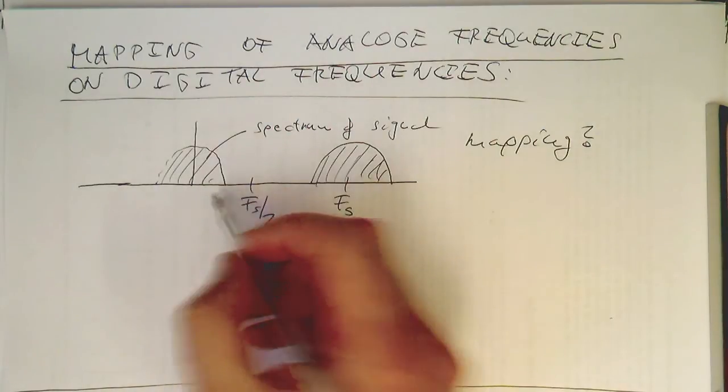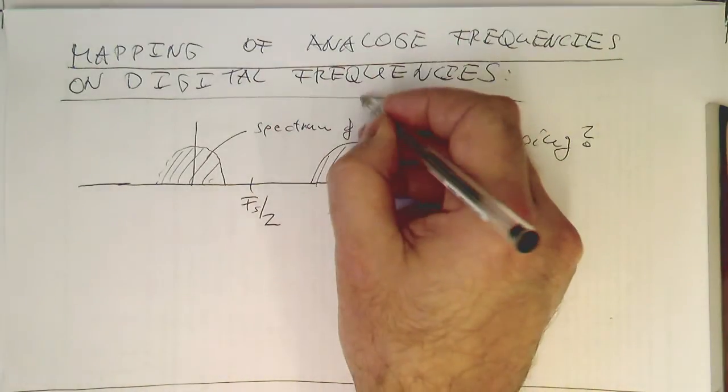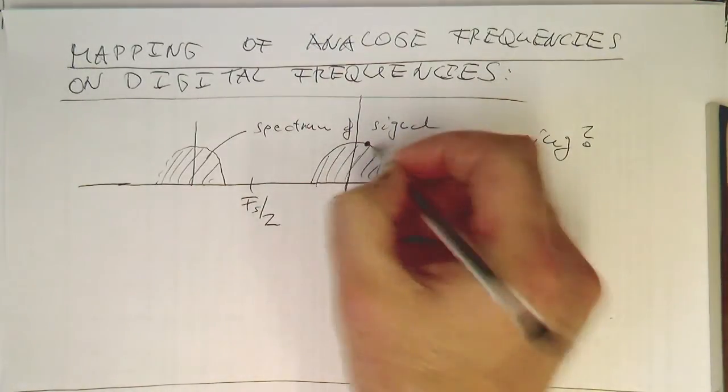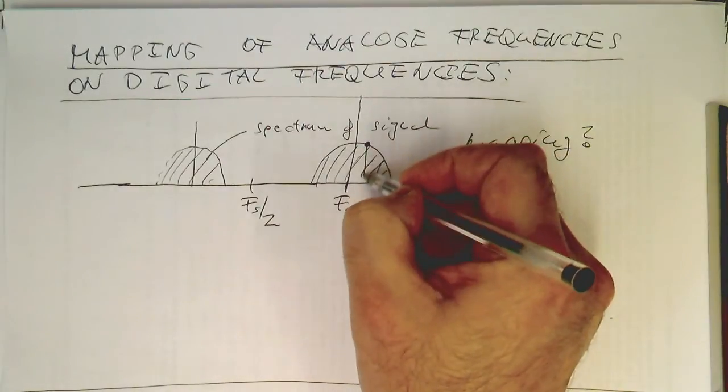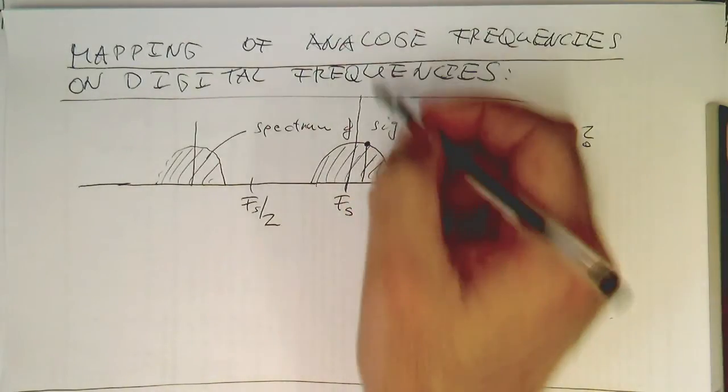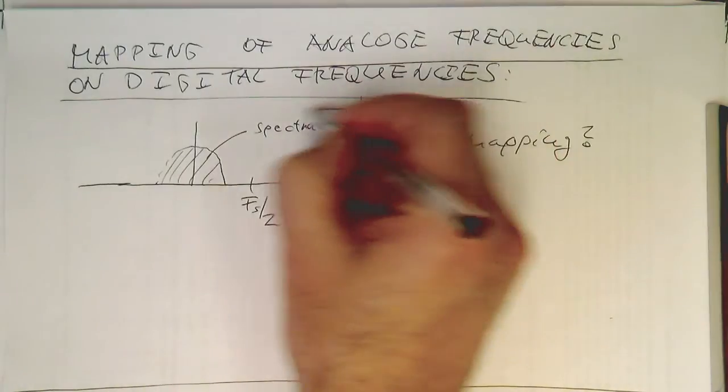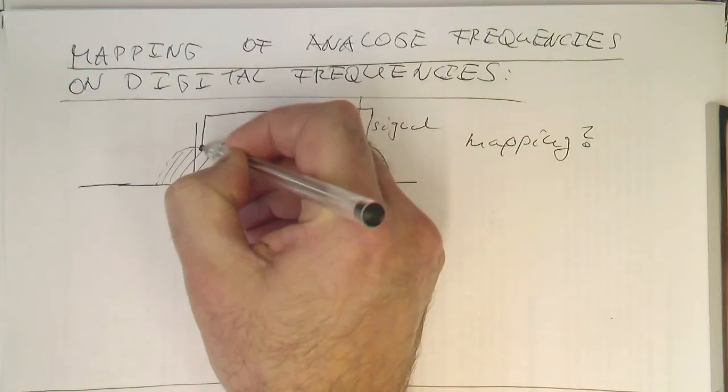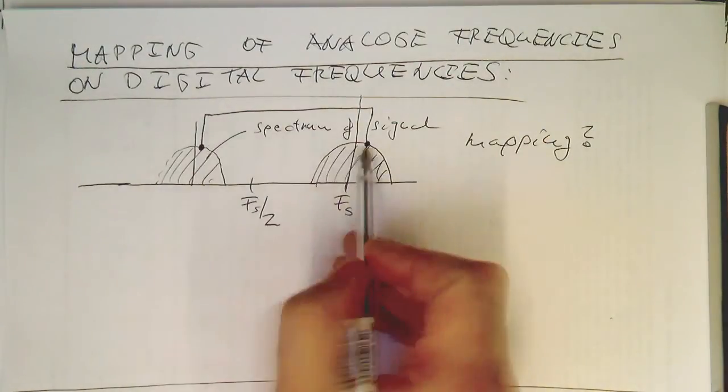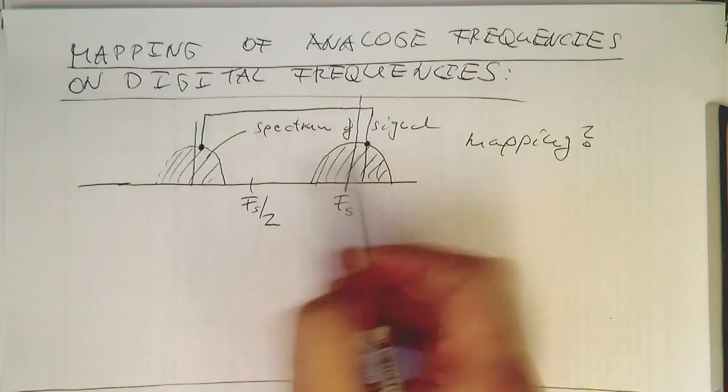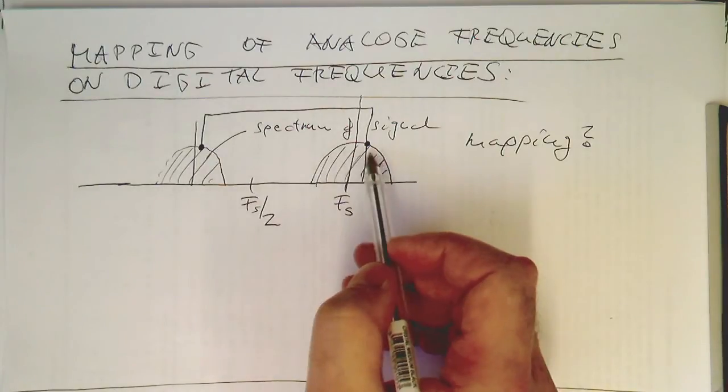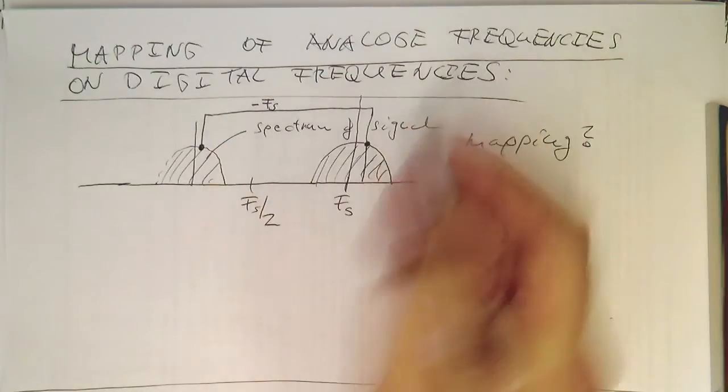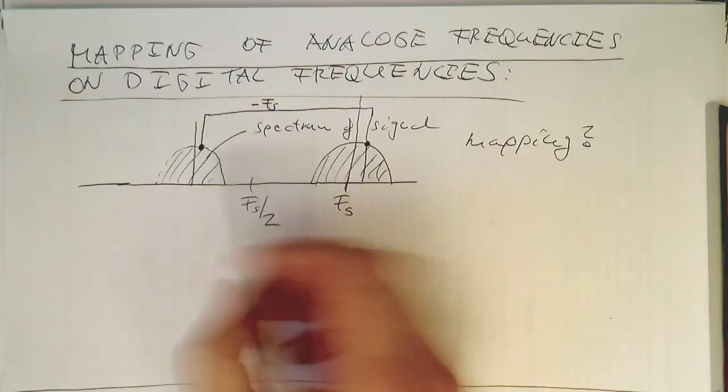Let's just start with a frequency above Fs here. So let's say we have a frequency here, somewhere above Fs. And obviously this maps on a frequency which is here. So the difference between these two frequencies is just exactly Fs, so we're just subtracting basically Fs and we are arriving at this frequency here.